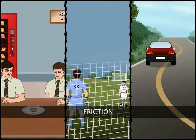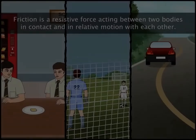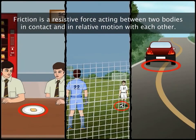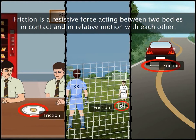All these actions occurred due to the presence of friction. Friction is formally defined as a resistive force that acts between two bodies in contact and in relative motion with each other.